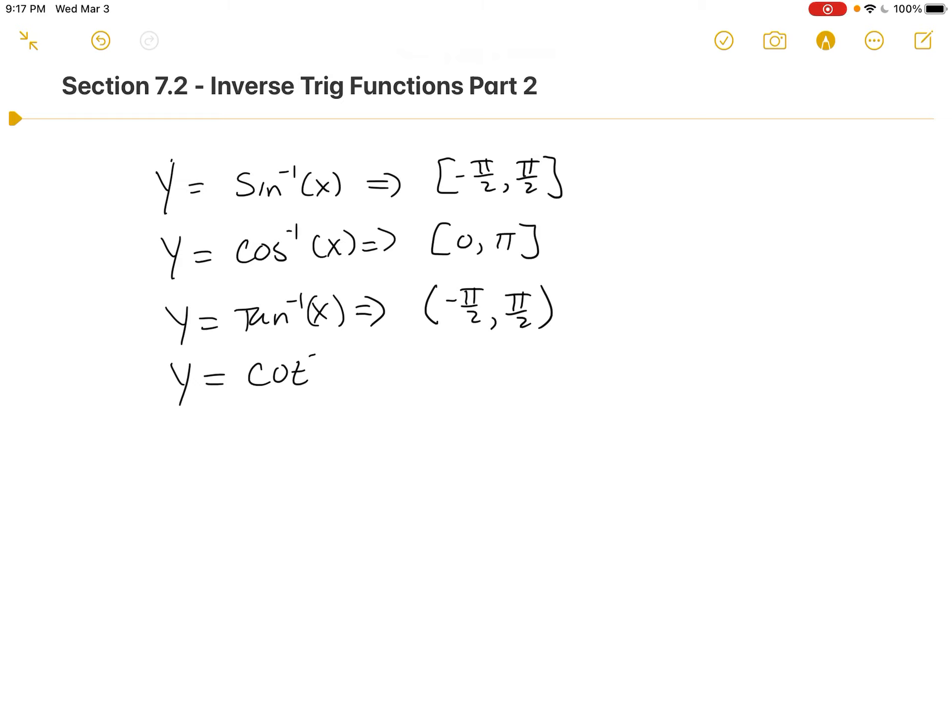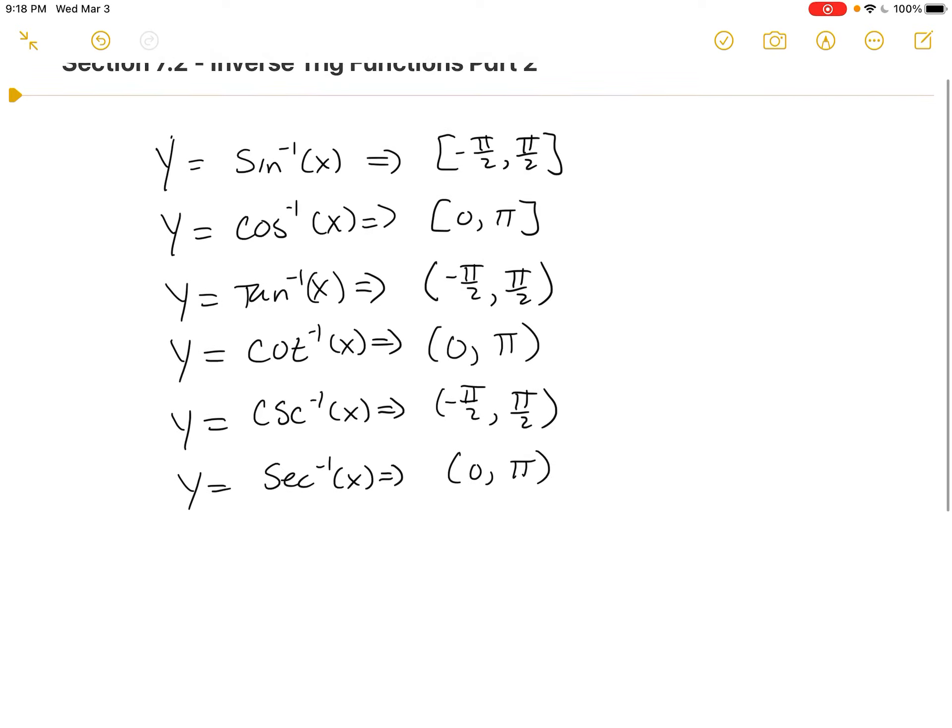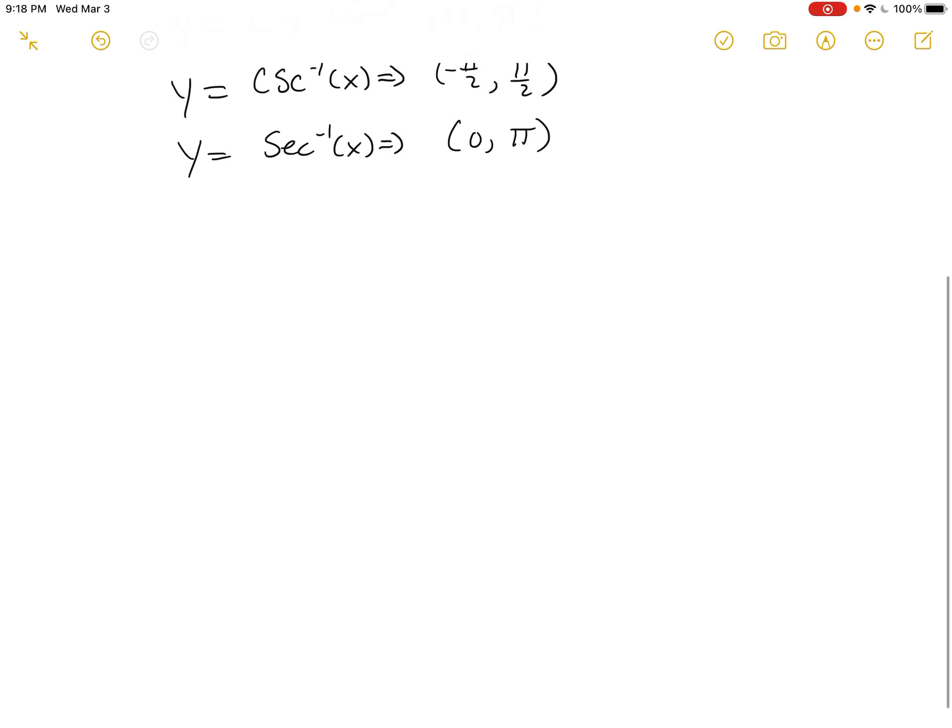If we looked and extended ourselves to cotangent of x like they do in this section, that's going to be like cosine because cosine's on top, and it's going to be between 0 and pi, again, not including those endpoints. And then as we get to cosecant first, that's the flip of sine, so it's going to have the same minus pi over 2 to pi over 2 outputs. And then the last one would be secant inverse of x, and that would be between 0 and pi.